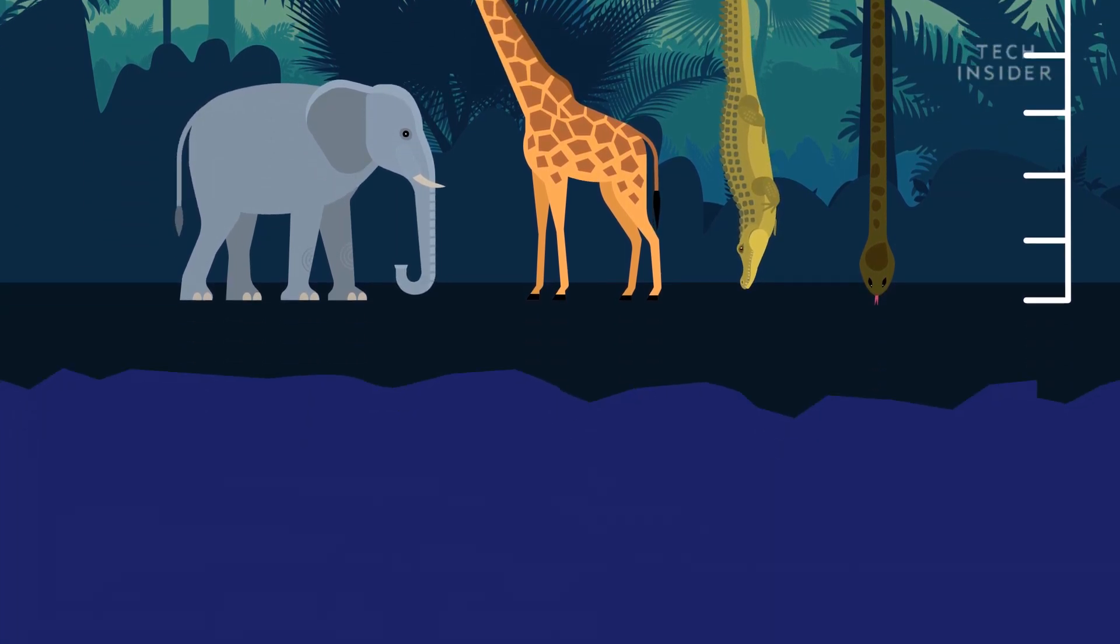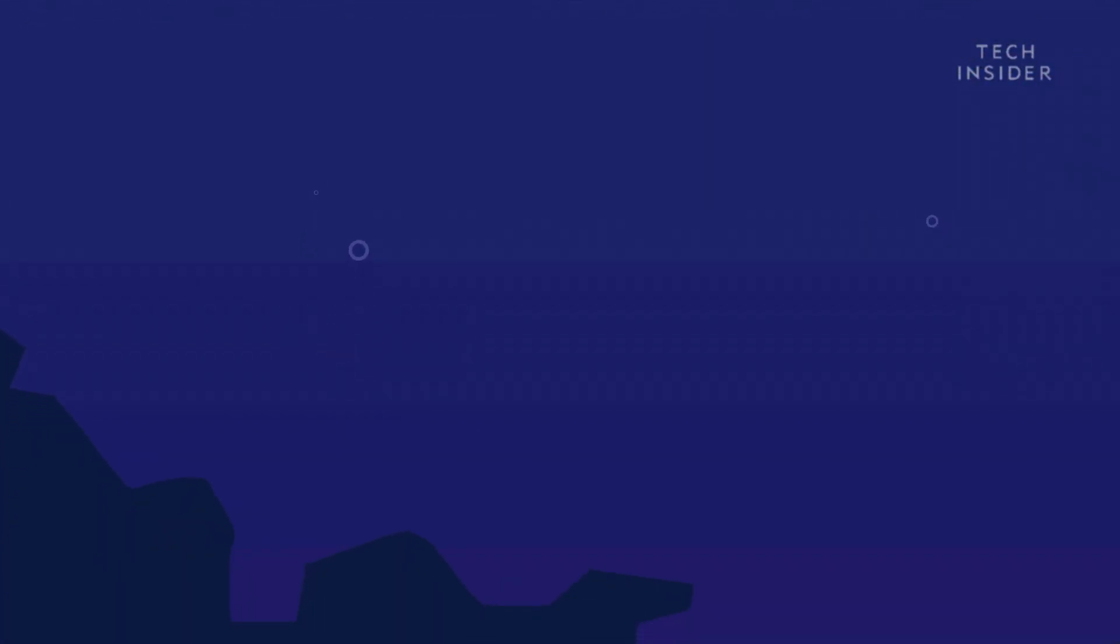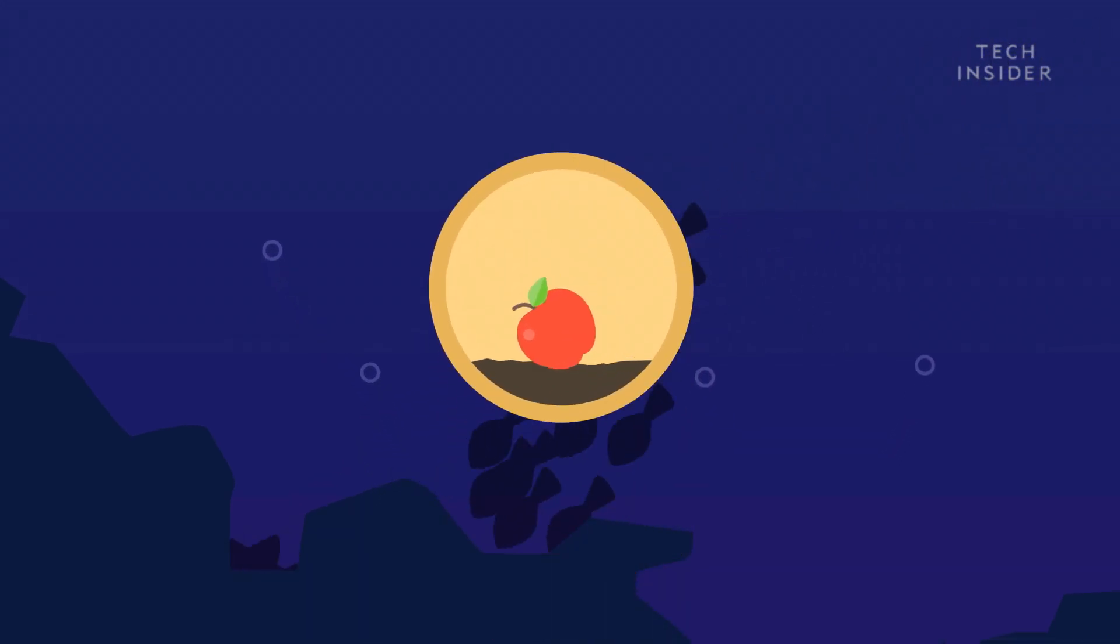But these land dwellers have nothing on animals of the deep. Supported by water, sea life can practically ignore gravity, which means they can grow much larger.